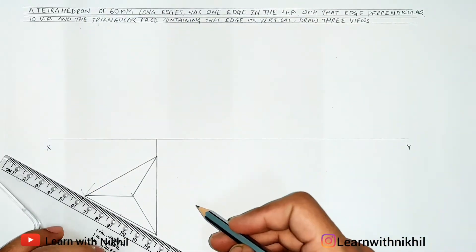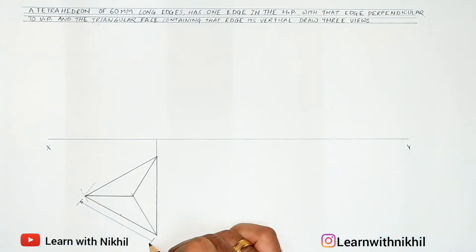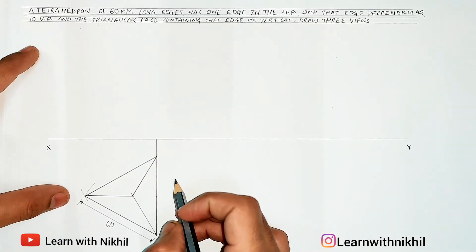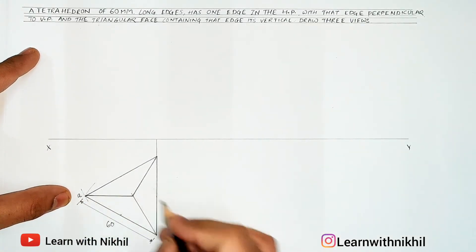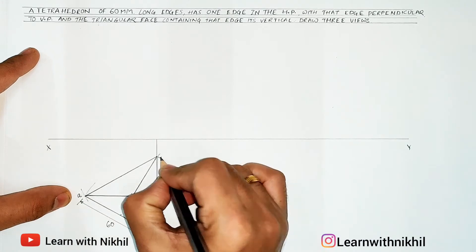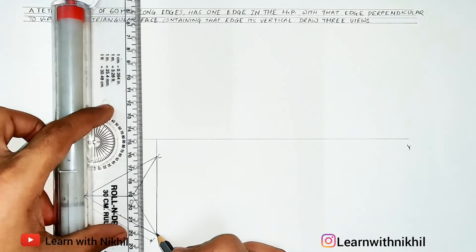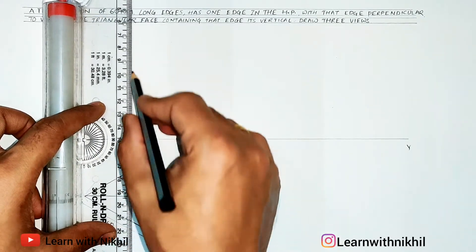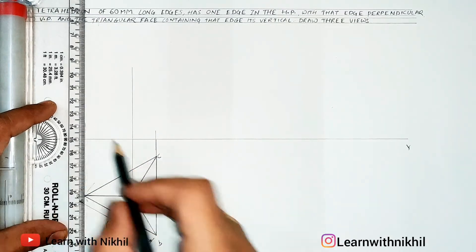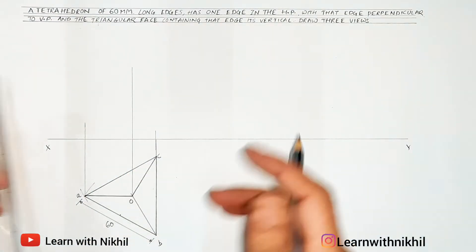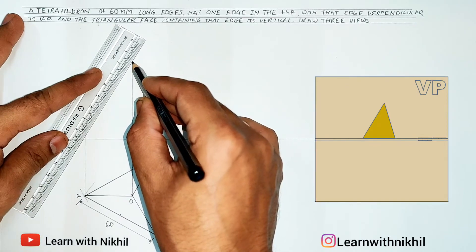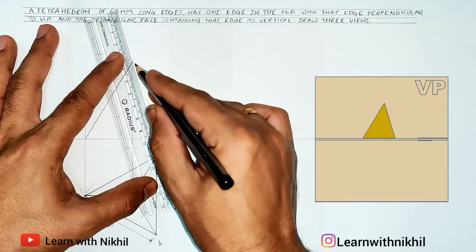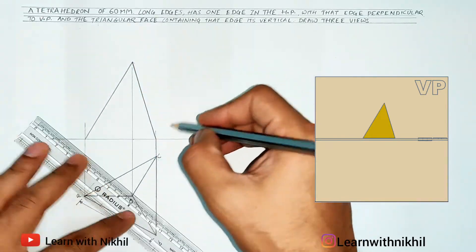Mark the dimension as 60 mm. Now we will name the corners: A, B, C for the base and O for the top vertex. Take all projections upward from the top view. As it is a pyramid shape, you have to draw a triangle shape for the front view — this is the front view of the tetrahedron, as we have also seen in the software.